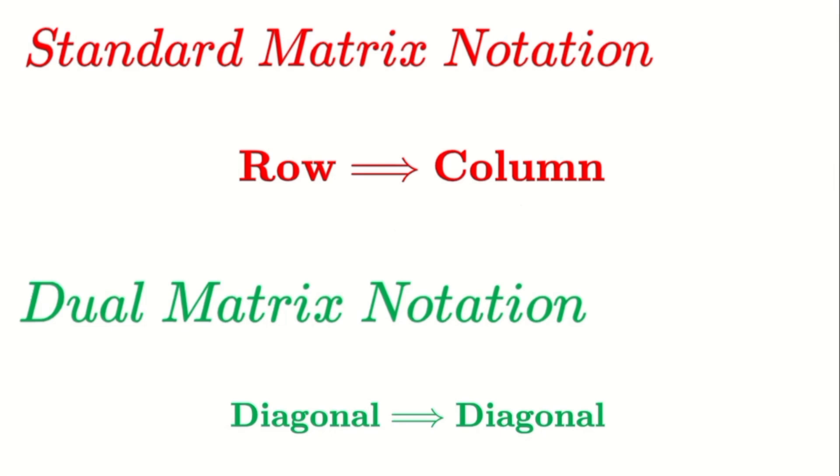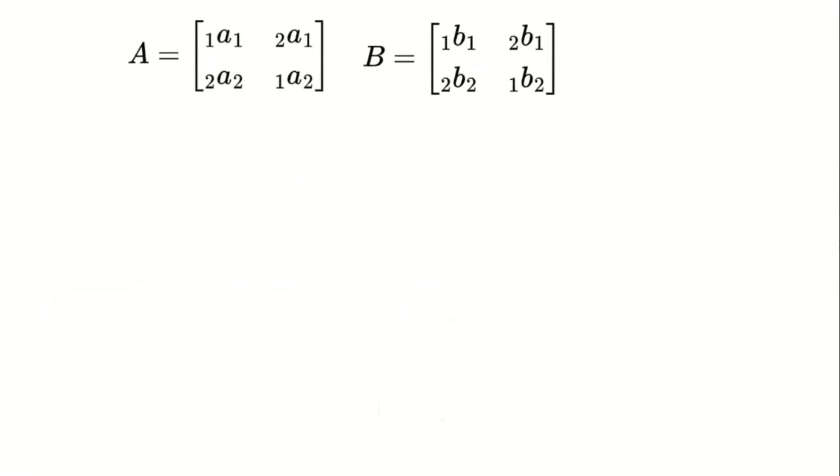Let's begin by understanding how to multiply dual matrices. Instead of multiplying rows by columns, as in the standard method, we multiply the diagonals of one matrix with the diagonals of another. For example, consider two general 2x2 matrices A and B.